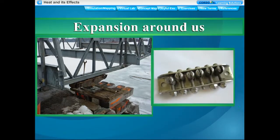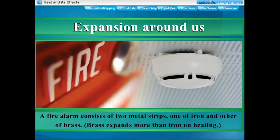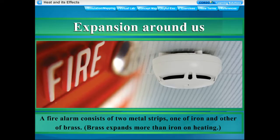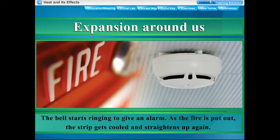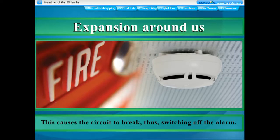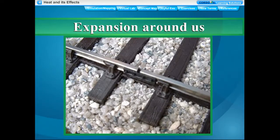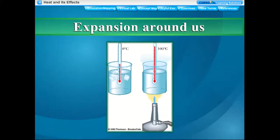Expansion around us: One end of a steel bridge is made to rest on rollers, and enough space is provided for expansion of steel during summers. A fire alarm consists of two metal strips — one of iron and one of brass. Brass expands more than iron on heating; when heated, the brass strip bends towards the iron strip, completing the bell circuit and ringing the alarm. When the fire is put out, the strip cools and straightens, breaking the circuit. Space is also left between sections of rail tracks to allow for expansion. Liquid thermometers are based on expansion of liquids on heating.